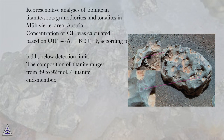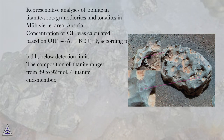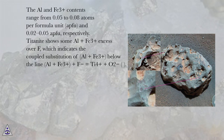Representative analyses of titanite in titanite-spots granodiorites and tonalites in the Moldanubian area, Austria. Concentration of O was calculated based on O equals O plus Fe3+ minus F. BDL = below detection limit. The composition of titanite ranges from 89 to 92 mole percent titanite endmember. The O and Fe3+ contents range from 0.05 to 0.08 APFU and 0.02 to 0.05 APFU, respectively.